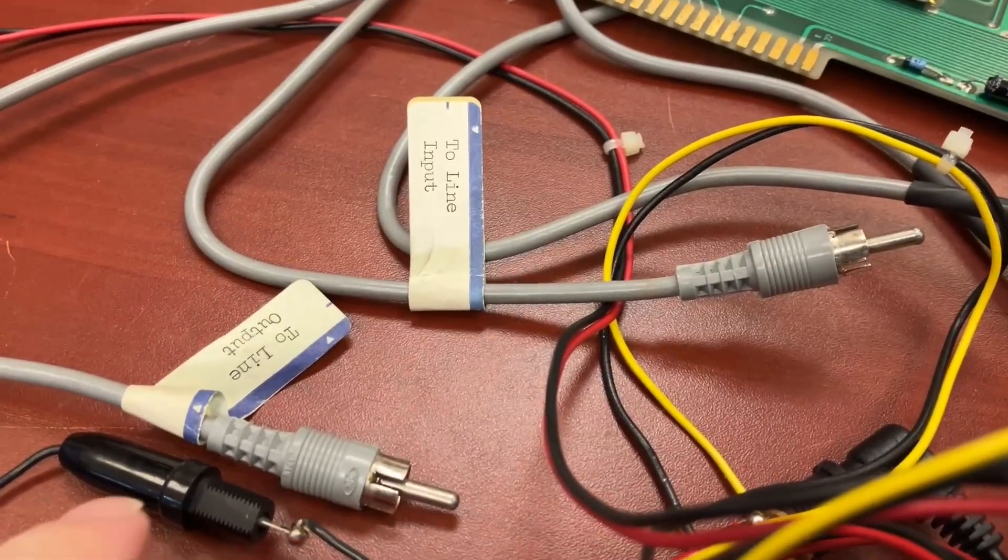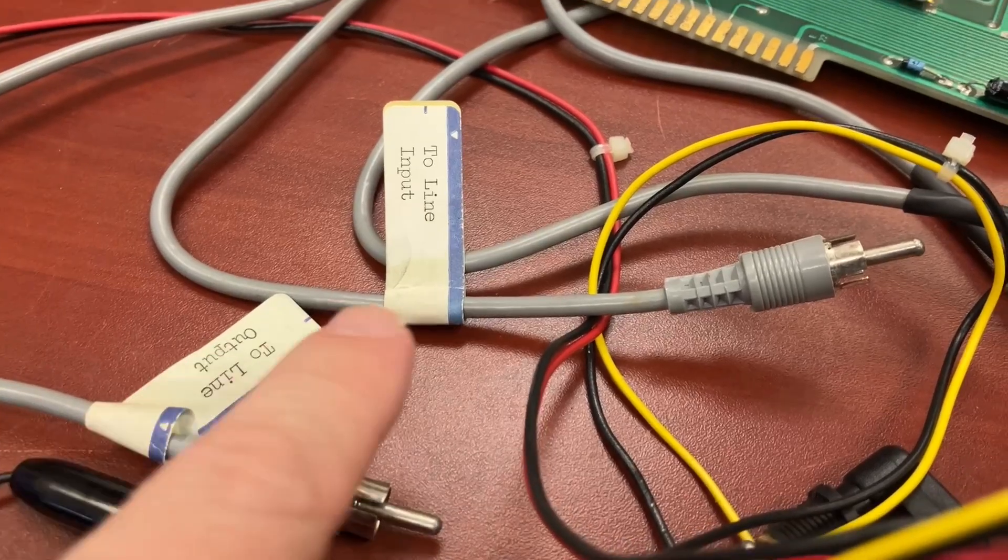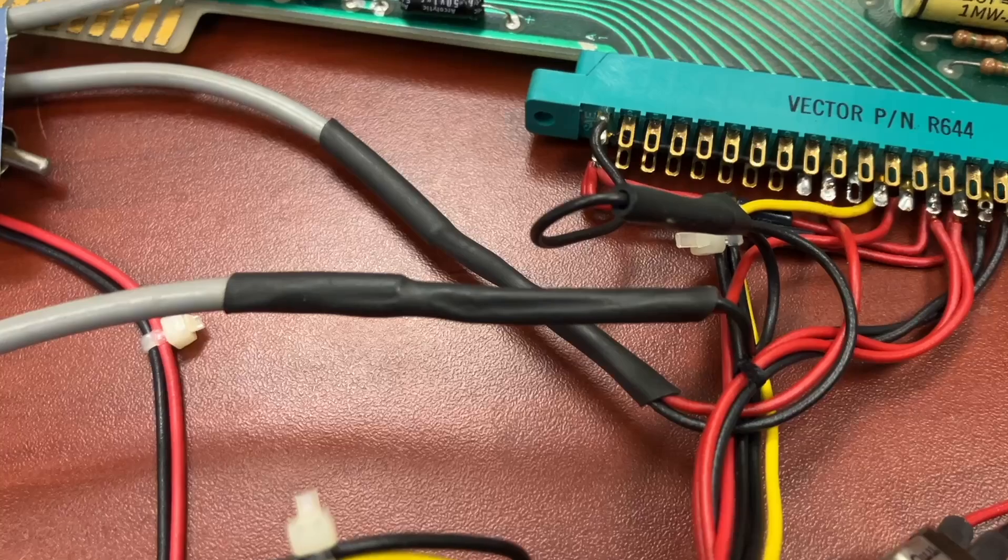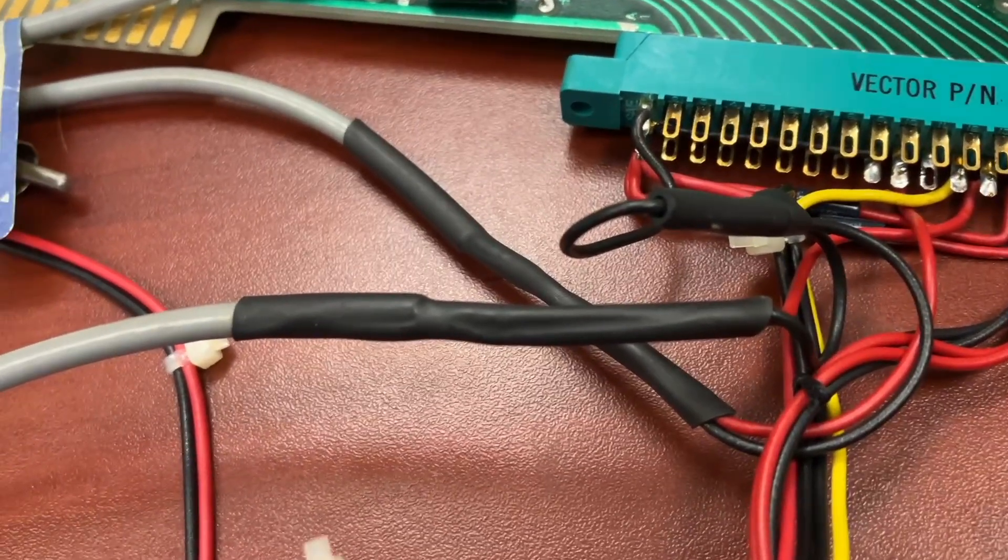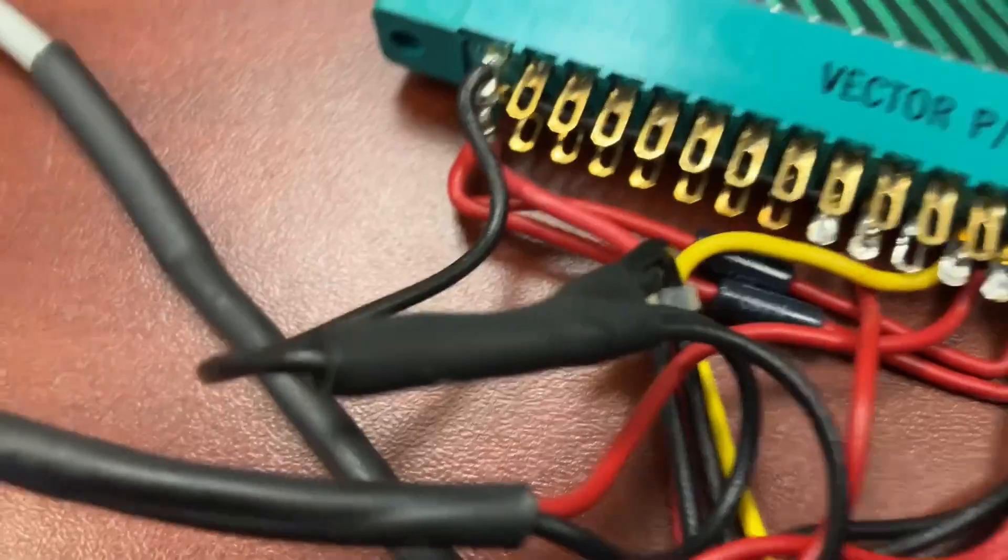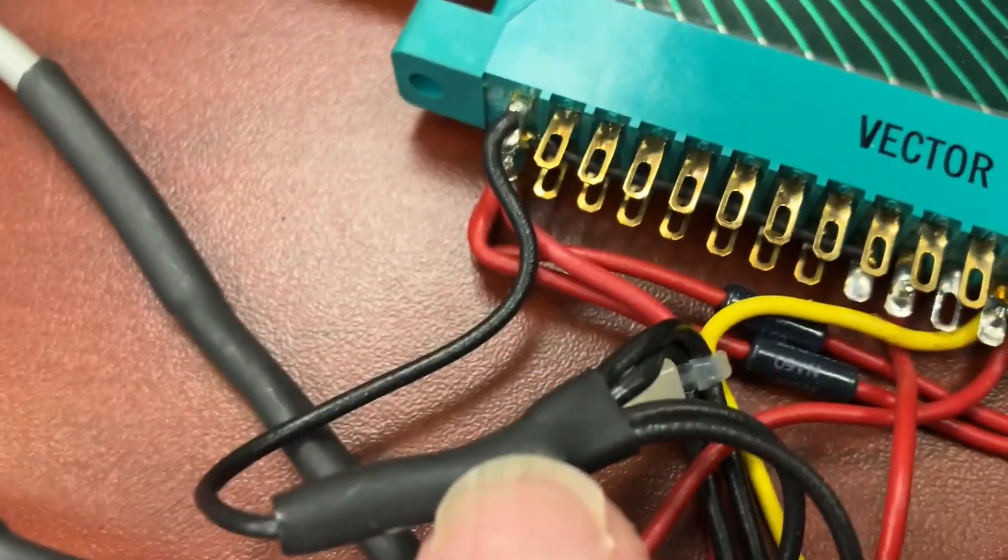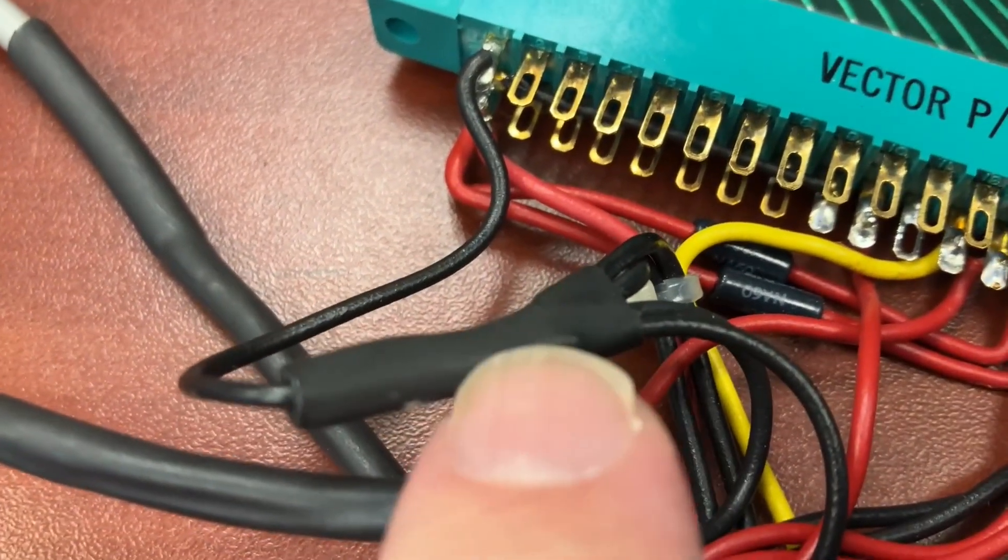Okay, we have a couple of RCA jacks labeled two-line output and two-line input. This is probably for cassette storage, but let's double check that. Okay, I'm just going to guess that the black wires go to some kind of ground. And yeah, if you look here, it looks like a whole bunch of black wires go together that all go to that ground. So that's all connected.